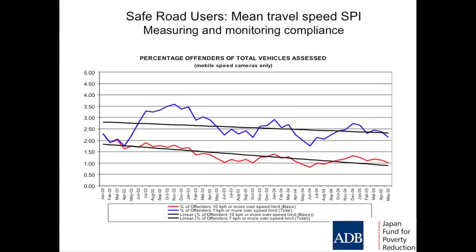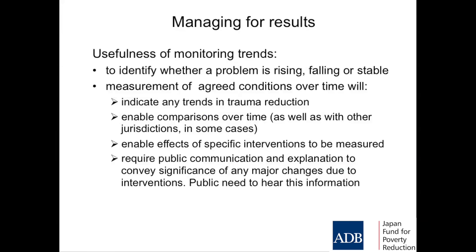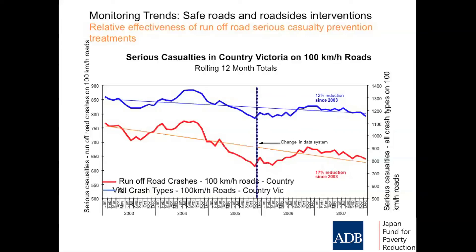One of the other things we did in Victoria was to measure compliance with speed limits as measured at speed cameras. The red line is the proportion of drivers who are offending — that is, seven kilometres an hour or more over the speed limit. Look how that has fallen during intense enforcement, from 2% of drivers down to less than 1%. It halved the number of drivers exceeding the speed limit. Police made that information available to all road safety partners so we could discuss it, be aware of it, talk about it. Monitoring trends — are we getting better, are we getting worse, are we stagnant? — is critically important.